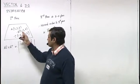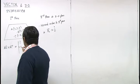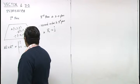AB vector is positional vector of B minus positional vector of A. So this is 1 minus 1, minus 1 minus 1, 1 minus 1.